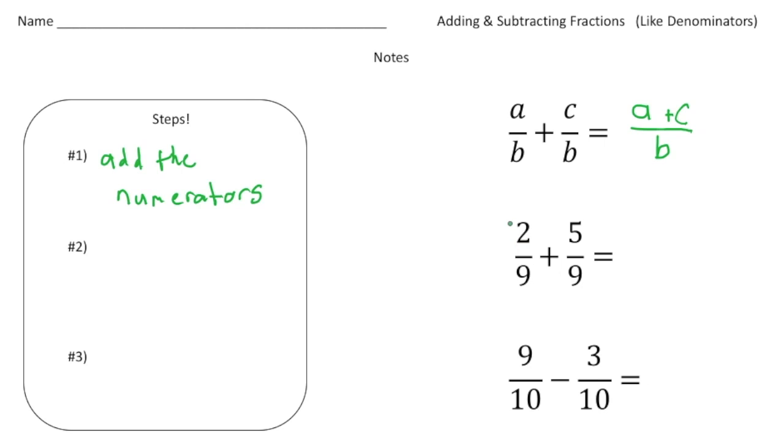And then the second step is you take those numerators and you put that number over the denominator. So part two is you keep the denominator.